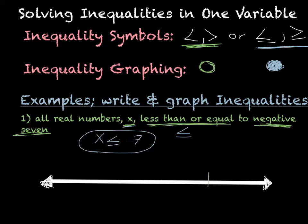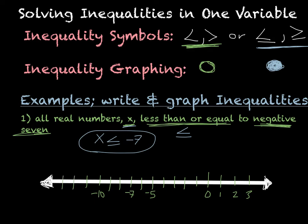On the number line with 0 in the middle, I mark out to negative 7. Because it's less than or equal to, I have to fill in the dot on negative 7. Then since x is less than that, it needs to go to more numbers that are less than negative 7. So it keeps going this way forever, and I fill in the arrow on that end too. That is my graph.